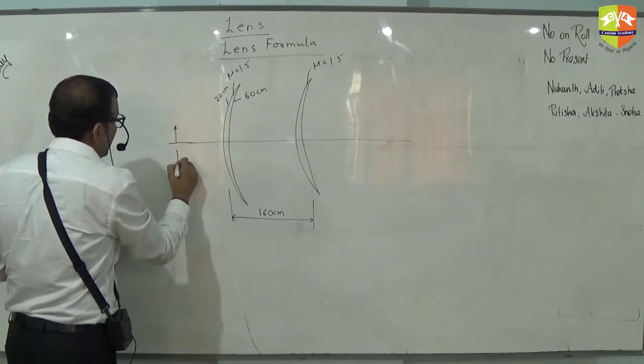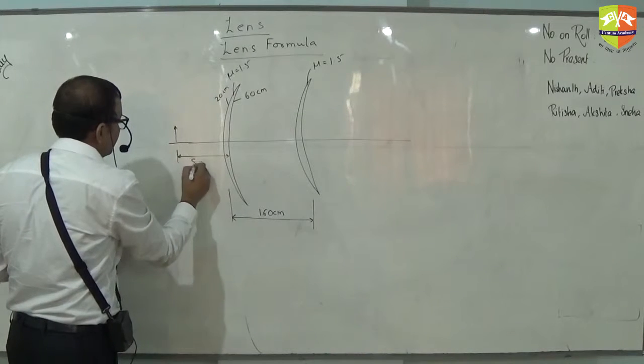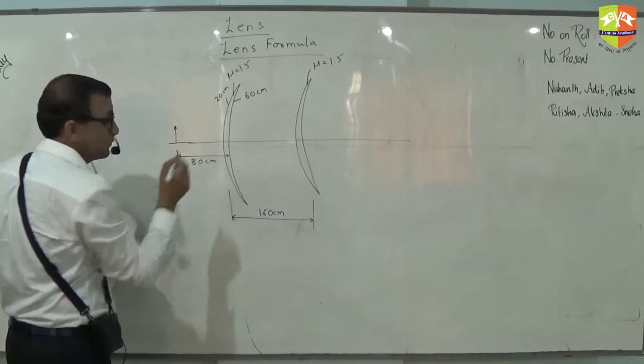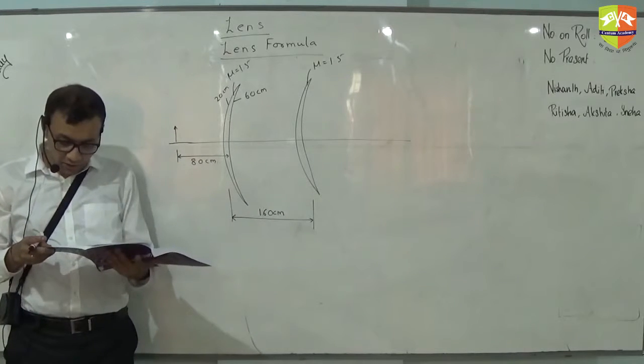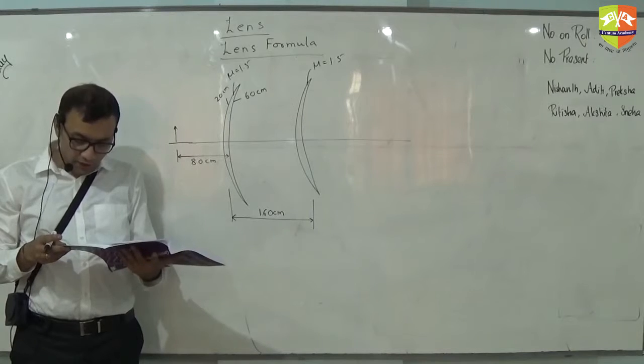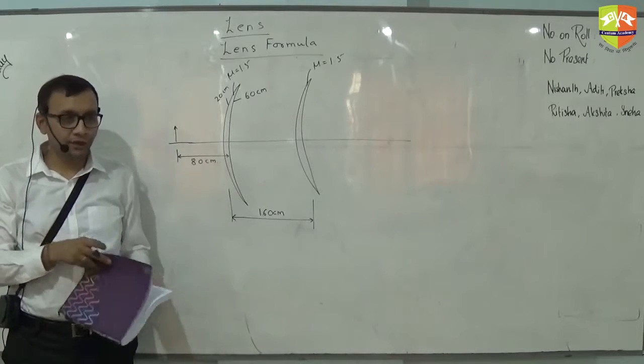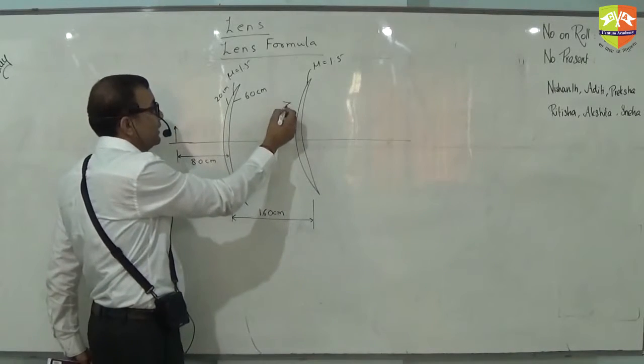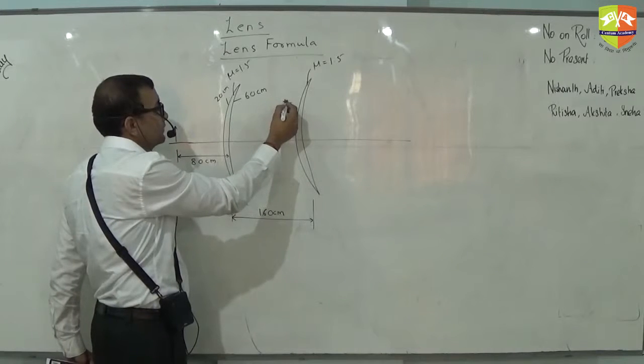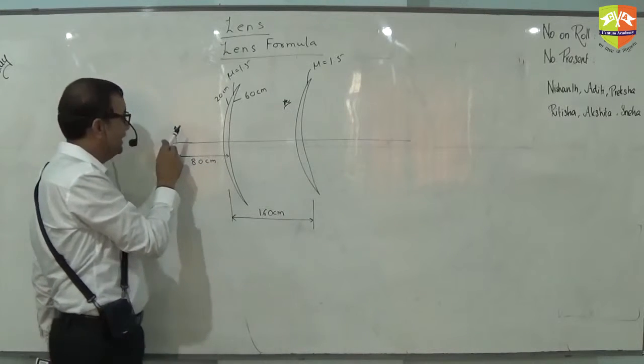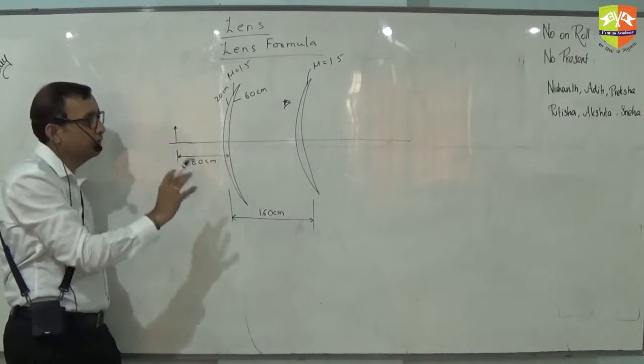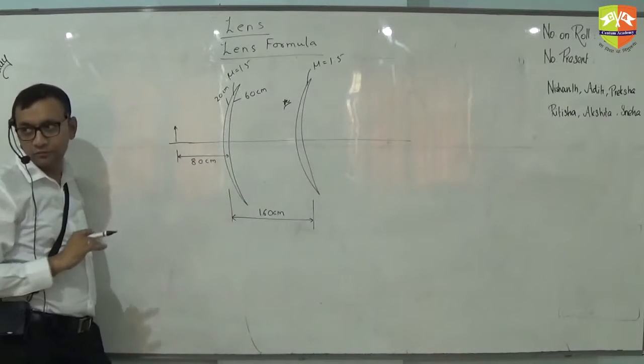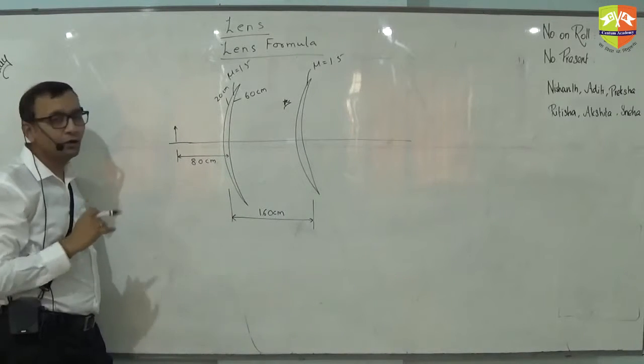If you place an object 80 cm to the left of the lens, the object is here, 80 cm. You need to locate the image of this object. So basically your observer is here, then your observer, this is your object. Light from the object should reach the observer. This lens is not there right now. Find the location of image.